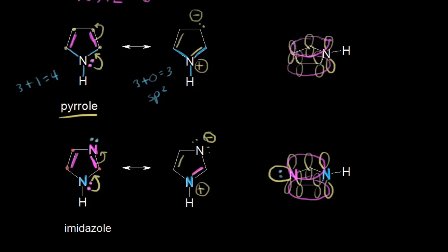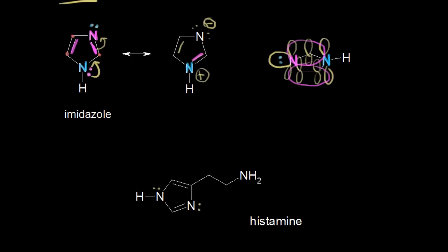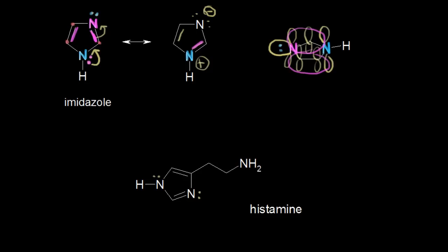The imidazole molecule is actually extremely important in biochemistry. Let's take a look at a famous molecule that contains the imidazole ring — histamine, which anyone who has allergies has heard of. You can see the imidazole ring on the left of the histamine molecule. So if you want to understand biochemistry, it's very useful to understand these concepts found in organic chemistry. Histamine would be an example of a biological aromatic heterocycle — this imidazole portion of the molecule is aromatic, and it satisfies the two criteria as we have seen.